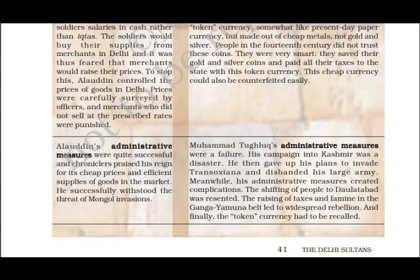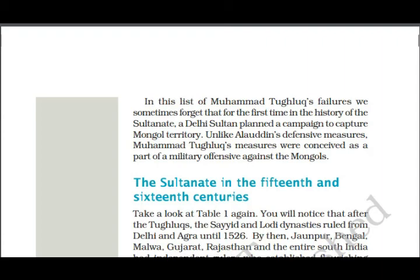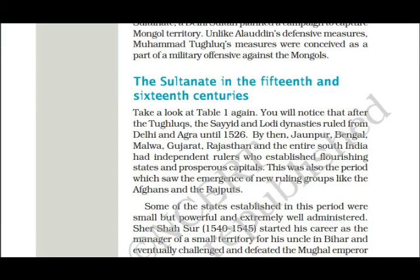These were the administrative measures of Alauddin Khalji and Muhammad Tughlaq. In this list of Tughlaq's failures, we sometimes forget that for the first time in Sultanate history, a Delhi Sultan planned a campaign to capture Mongol territory. Alauddin's measures were defensive, while Tughlaq's were offensive against the Mongols. In the 15th and 16th centuries, after the Tughlaqs, the Sayyid and Lodi dynasties ruled Delhi until 1526. Independent rulers emerged in Jaunpur, Bengal, Malwa, Gujarat, Rajasthan, and South India.